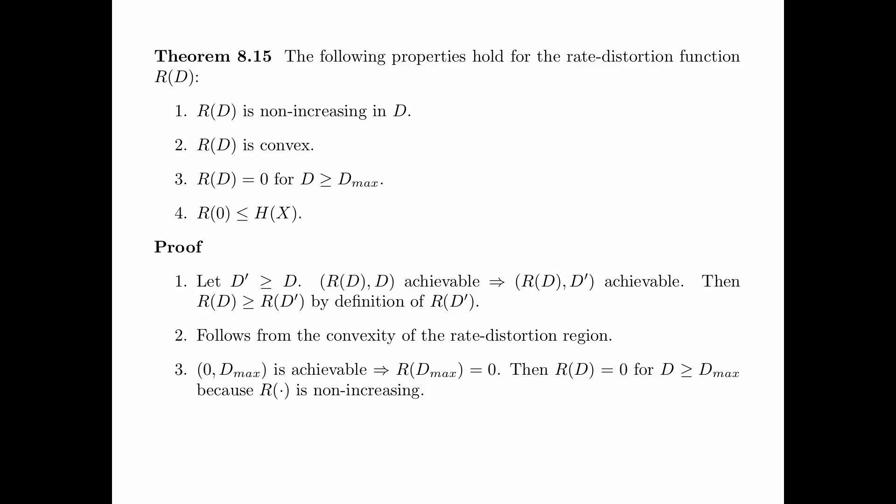For the third property, consider that (0, D_max) is achievable. By definition of R(D_max), we have 0 greater than or equal to R(D_max). On the other hand, since R(D_max) is non-negative, we conclude that R(D_max) equals 0. Therefore, R(D) equals 0 for D greater than or equal to D_max, because R(D) is non-increasing. This proves property 3.